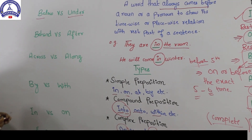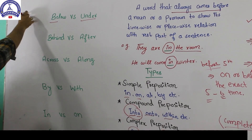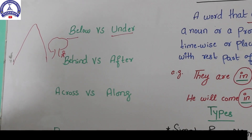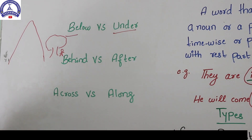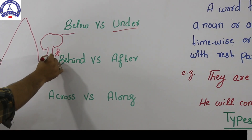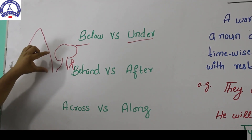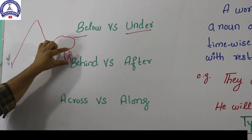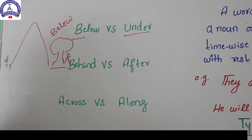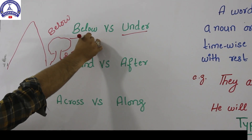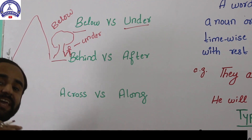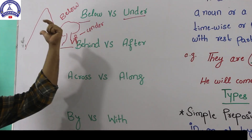Below versus under — if you have a mountain, a tree, and a person: the tree is lower than the mountain, and the man is also lower than the tree, but they are in different positions. When something is lower but not directly underneath, we use 'below' — the tree is below the mountain. When something is directly underneath, we use 'under'. So, 'below' for indirect lower position and 'under' for directly beneath.